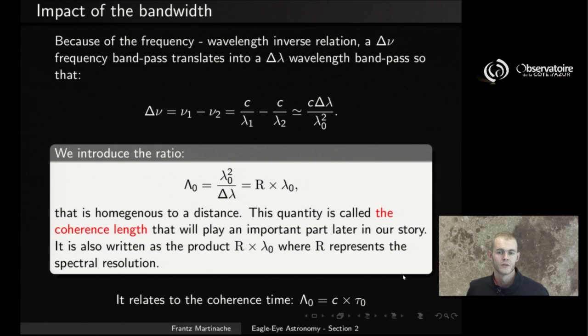And it is, of course, this coherence length is, of course, related to the coherence time we identified earlier. We simply have this relation: lambda_0 is simply the speed of light times tau_0. So, the coherence length is the distance that light covers over the coherence time.